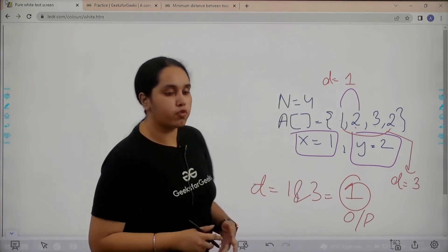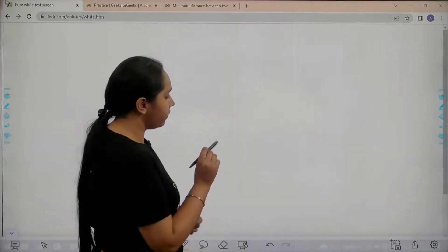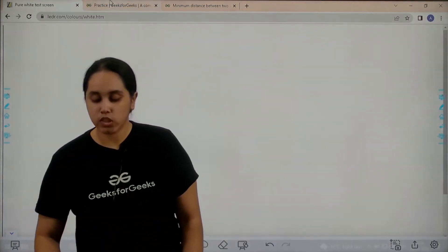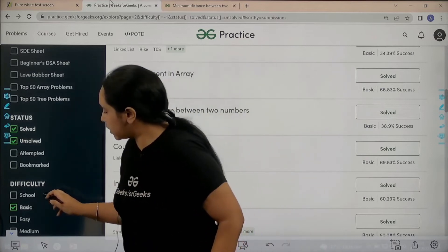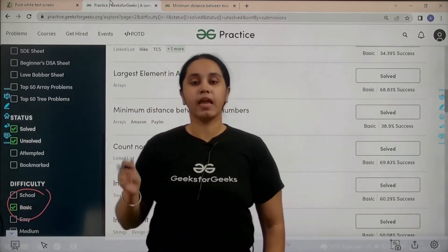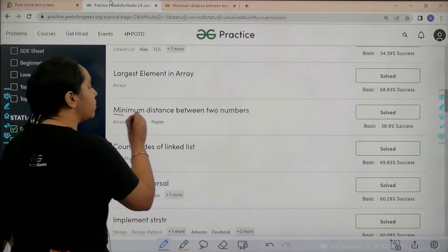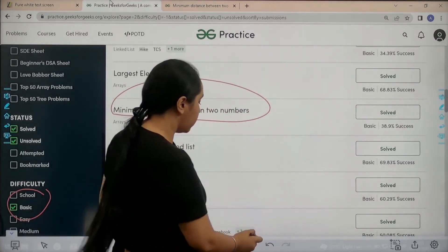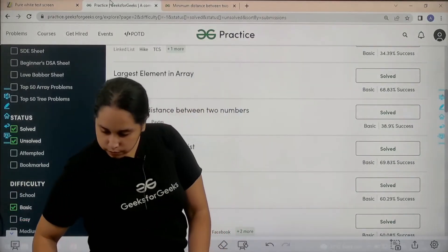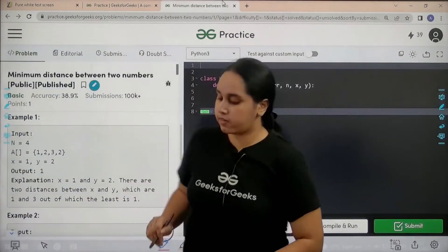You need to go to the practice portal. In the practice portal, in the difficulty section, choose Basic. Then find the problem minimum distance between two numbers. Now let's move forward, here is the question.